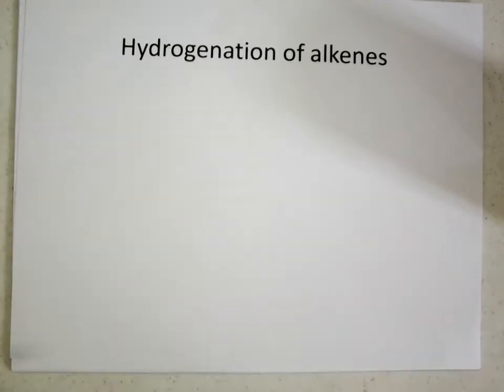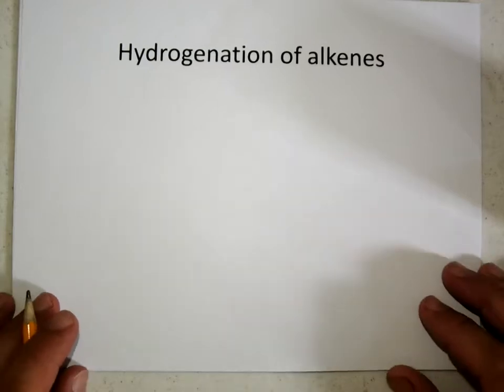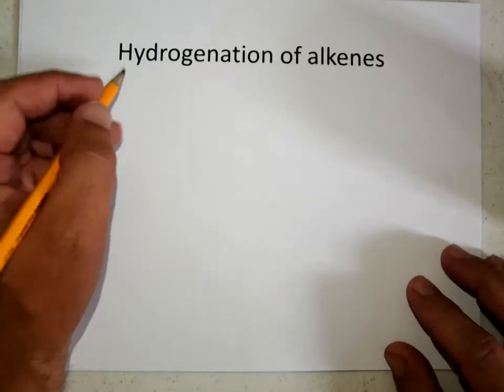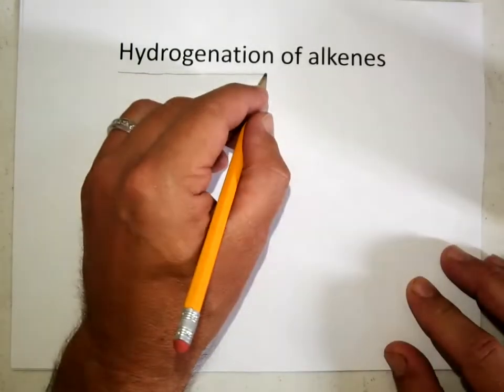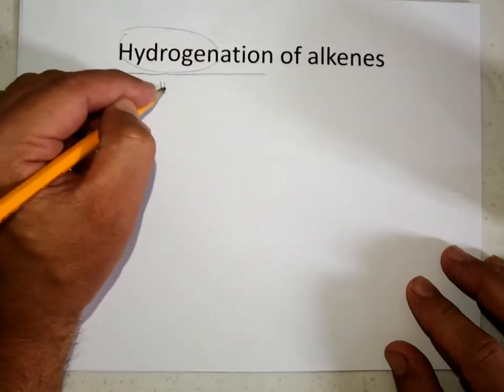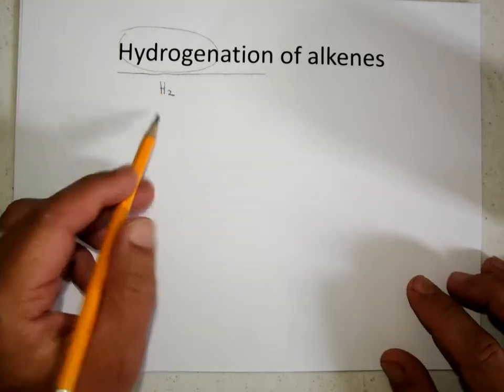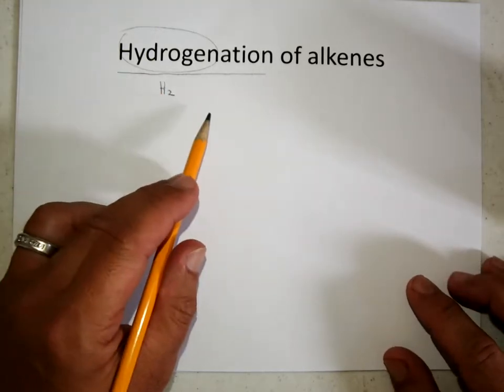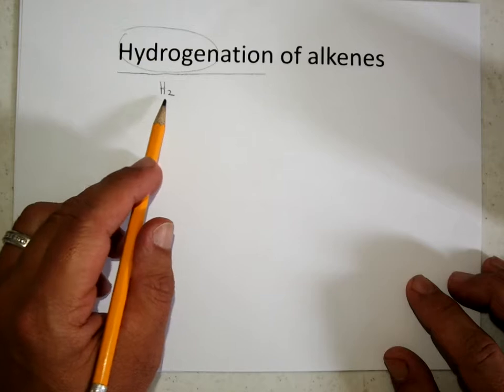Let's see if the document camera has enough memory to do a short description of the hydrogenation of alkenes. Hydrogenation of alkenes simply means we're adding hydrogen, H2. So we're going to add a hydrogen to each carbon of the alkene, and that's going to make an alkane.